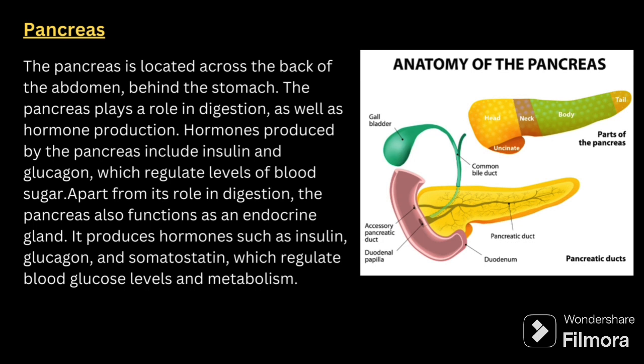Next, we have to talk about the pancreas. The pancreas is located across the back of the abdomen behind the stomach. The pancreas plays a role in digestion as well as hormone production. Hormones produced by the pancreas include insulin and glucagon, which regulate blood sugar levels. The pancreas also functions as an endocrine gland, producing hormones such as insulin, glucagon and somatostatin, which regulate blood glucose levels and metabolism.